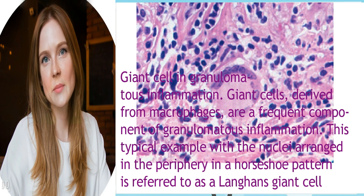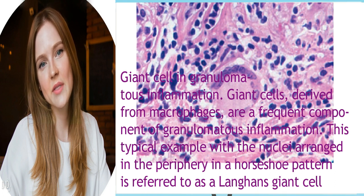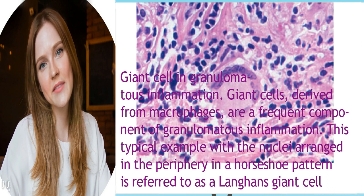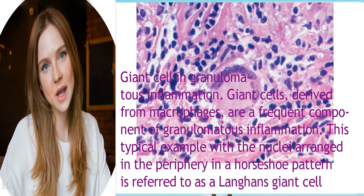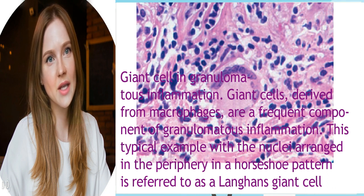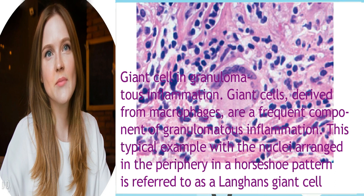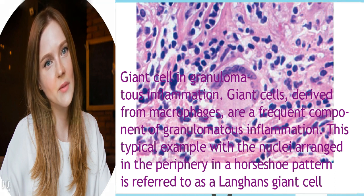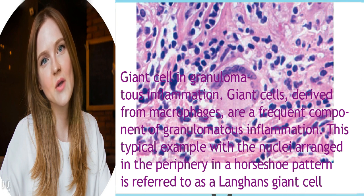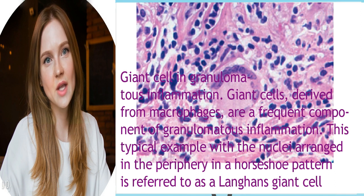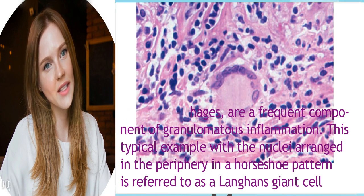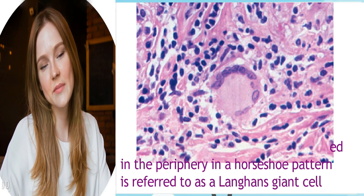The foreign body giant cell has scattered nuclei. Granulomatous inflammation is the characteristic form of inflammation associated with a number of diverse etiologic agents, including infectious agents: Mycobacterium tuberculosis and M. leprae, Blastomyces dermatitidis, Histoplasma capsulatum, Coccidioides immitis, and many other fungi, Treponema pallidum, the bacterium of cat scratch disease Bartonella henselae, foreign bodies, and unknown etiology including sarcoidosis.